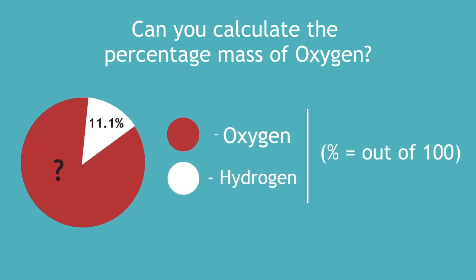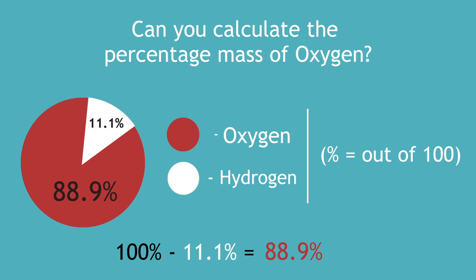Remember, percent means out of 100. Therefore, the correct answer is 100% take away 11.1%, that's the percent mass of hydrogen. So, 88.9% is percent by mass oxygen.